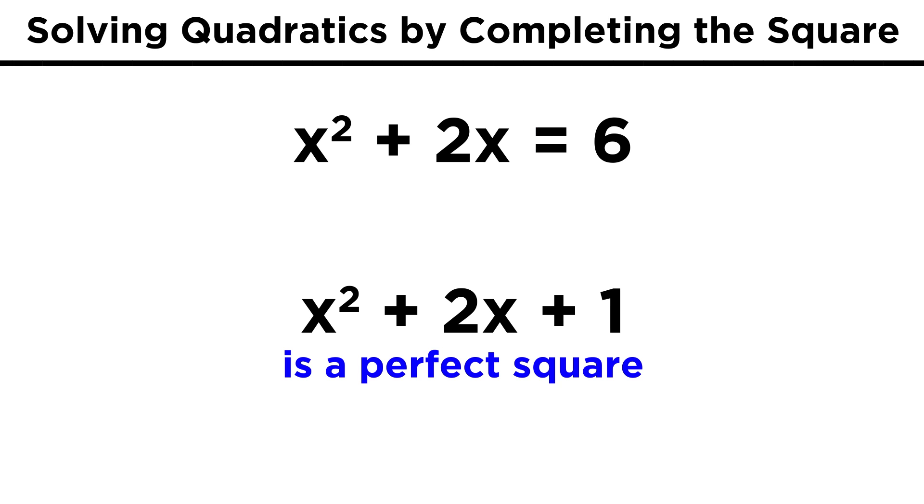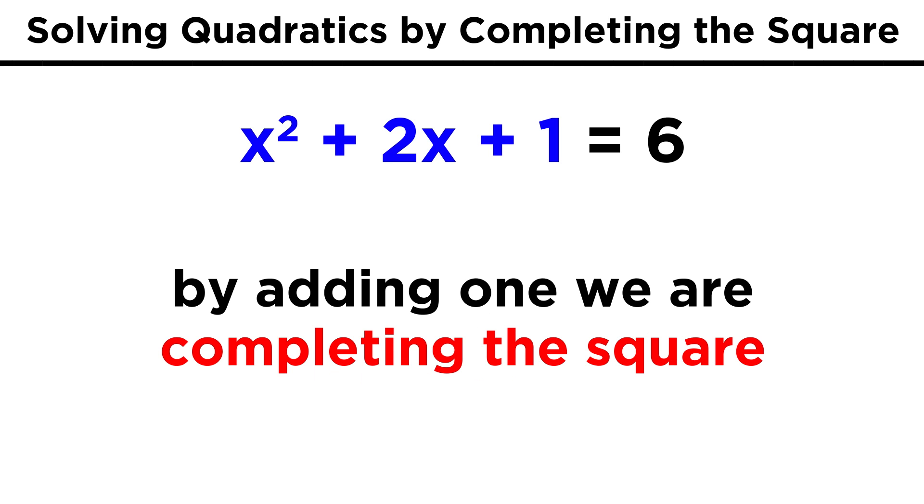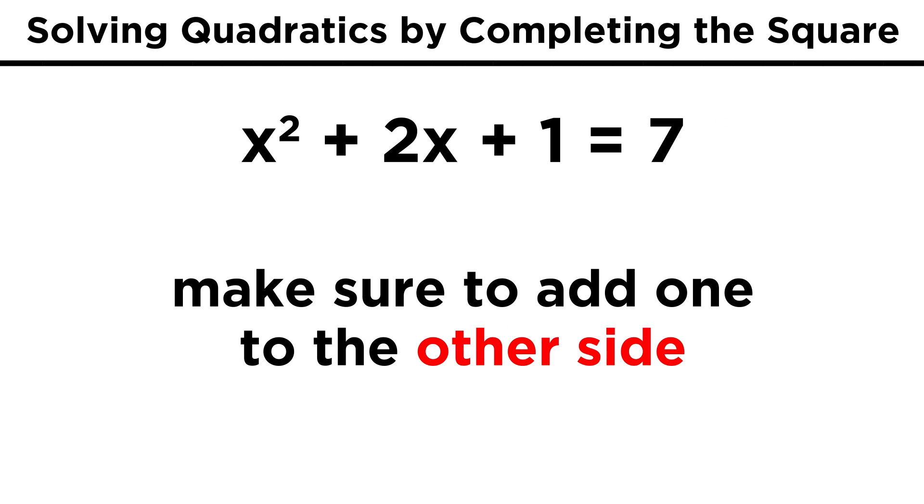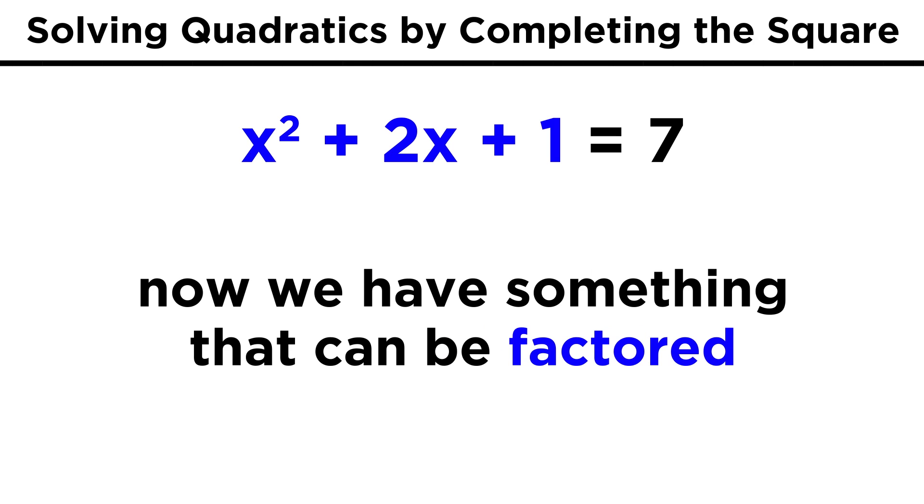Earlier we saw that x squared plus 2x plus 1 is a perfect square, so what if we now add 1 so that we suddenly do have a perfect square polynomial, in essence, completing the square. Well whatever we do, we have to do it to both sides. So we end up with x squared plus 2x plus 1 equals 7. The reason this is useful is that we can now express the left side as x plus 1 quantity squared.